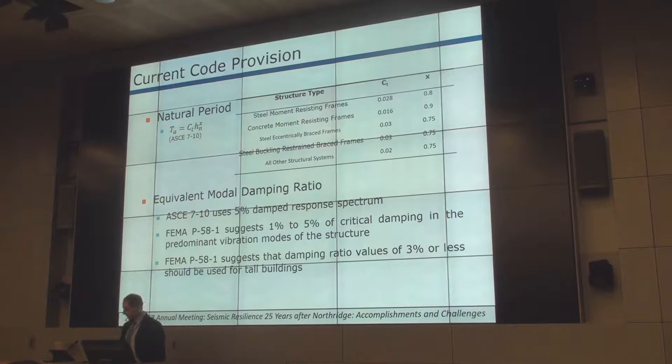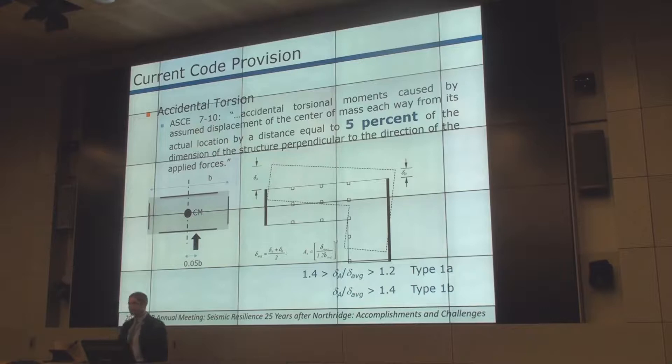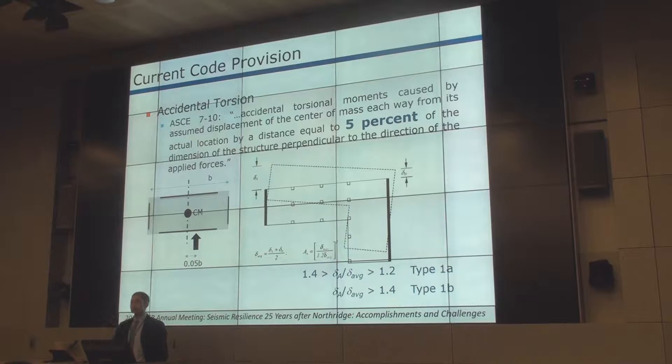In terms of accidental torsion, there are two pictures here. The picture on the right-hand side shows a building that has irregularity in it — accidental torsion with these kinds of buildings is dwarfed by the inherent torsion. We're talking about accidental torsion in symmetric buildings, where the source is uncertainty in the stiffness of the lateral load-resisting lines or the uncertainty in the distribution of mass on each floor.